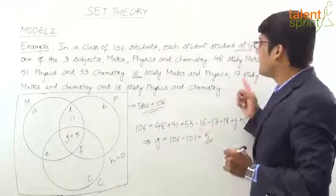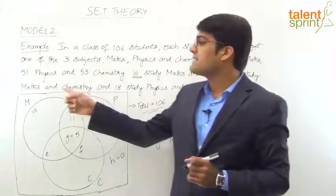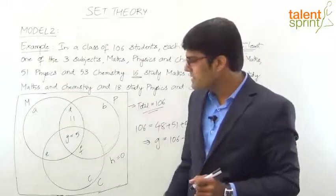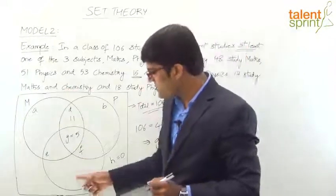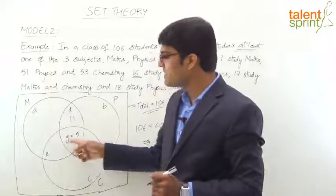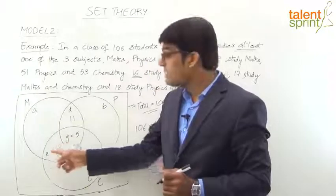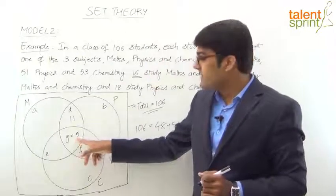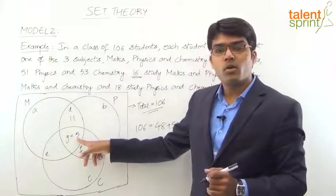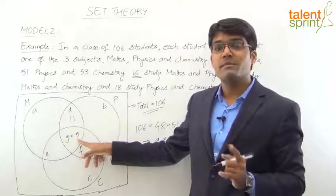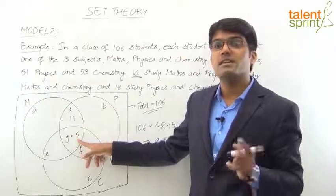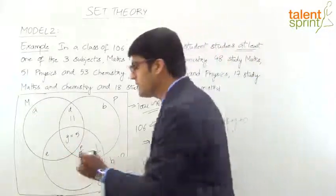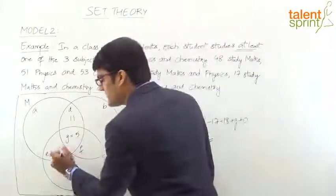Next, 17 study Maths and Chemistry. Maths and Chemistry corresponds to region E + G. So E + G = 17. Since G = 5, E = 17 − 5 = 12.